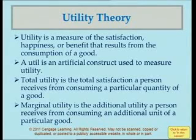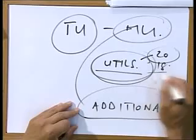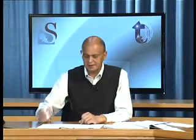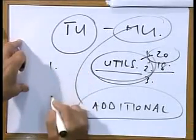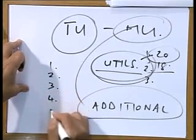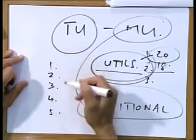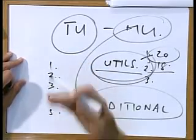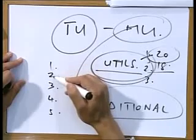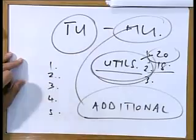So if you eat the first apple, it will give you maybe 20 utils. The second apple will give you 18 utils. It's the additional utility you gain by eating a second or third apple — that is what we mean by marginal utility. It is the additional utility you gain by consuming equal successive units of a product, whether that's hamburgers, DVDs, or any other good.